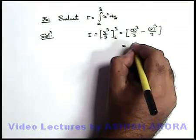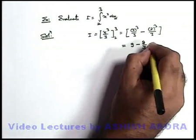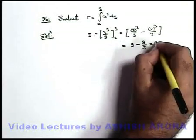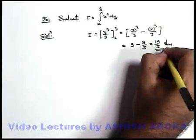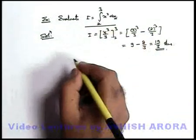So here we are getting the result, this is 27 by 3, that is 9 minus 8 by 3. So here result will be 19 by 3. This is an absolute value. This 19 by 3 is the result of this definite integration.